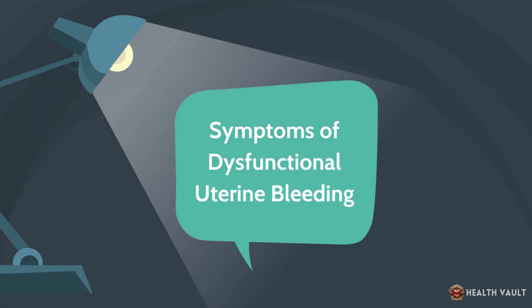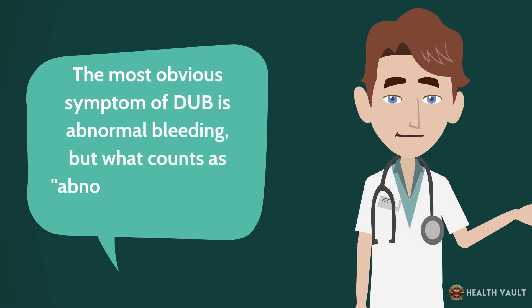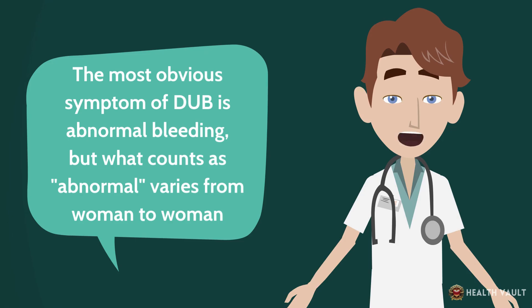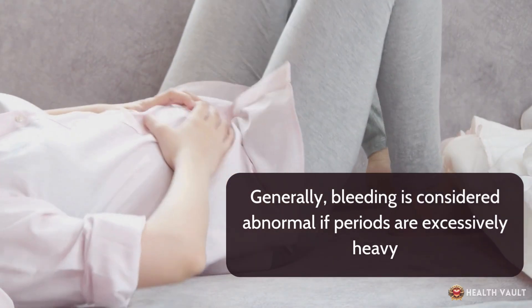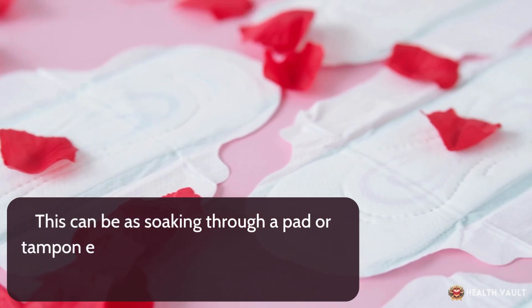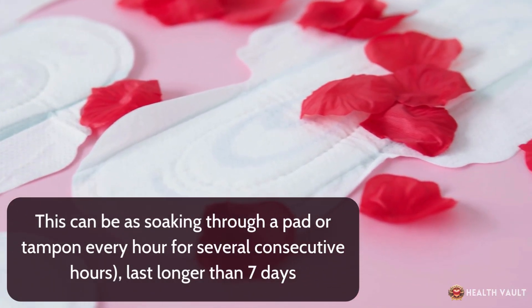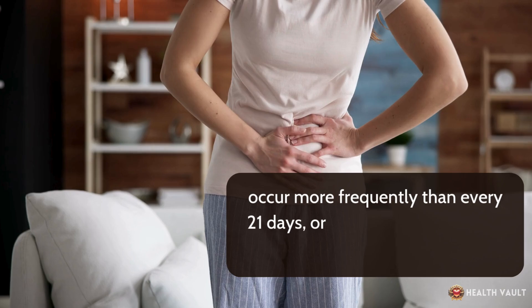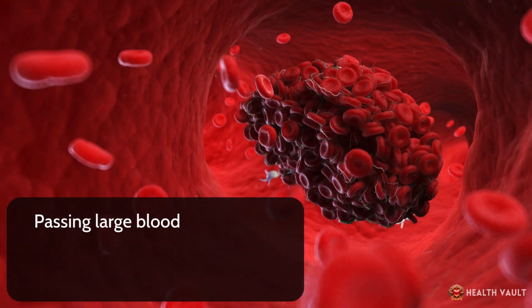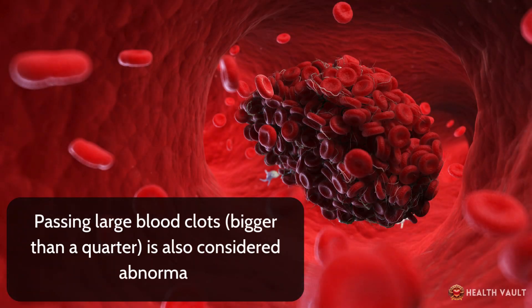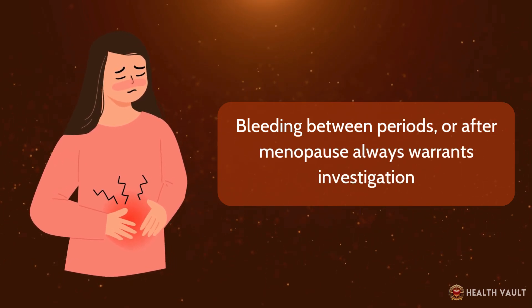The most obvious symptom of DUB is abnormal bleeding, but what counts as abnormal varies from woman to woman. Generally, bleeding is considered abnormal if periods are excessively heavy — soaking through a pad or tampon every hour for several consecutive hours — last longer than 7 days, occur more frequently than every 21 days, or happen less frequently than every 35 days. Passing large blood clots bigger than a quarter is also considered abnormal. Bleeding between periods or after menopause always warrants investigation.